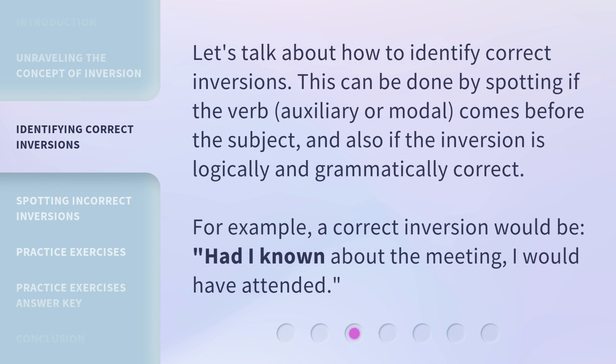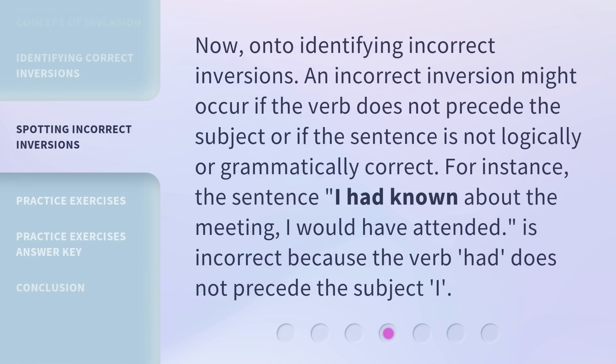Let's talk about how to identify correct inversions. This can be done by spotting if the verb — auxiliary or modal — comes before the subject, and also if the inversion is logically and grammatically correct. For example, a correct inversion would be: 'Had I known about the meeting, I would have attended.' An incorrect inversion might occur if the verb does not precede the subject, or if the sentence is not logically or grammatically correct. For instance, the sentence 'I had known about the meeting, I would have attended' is incorrect because the verb 'had' does not precede the subject 'I.'